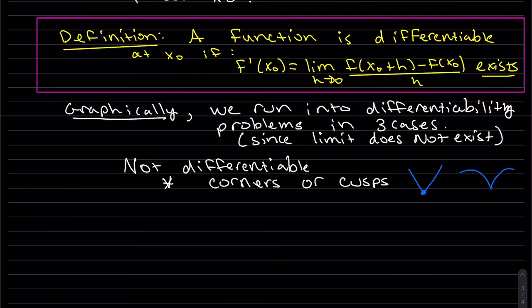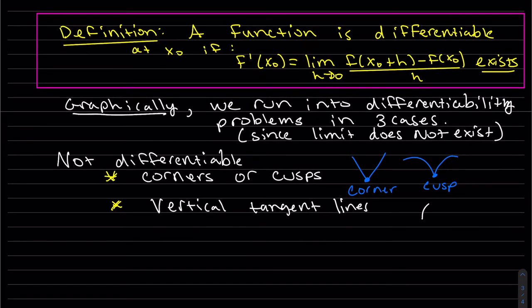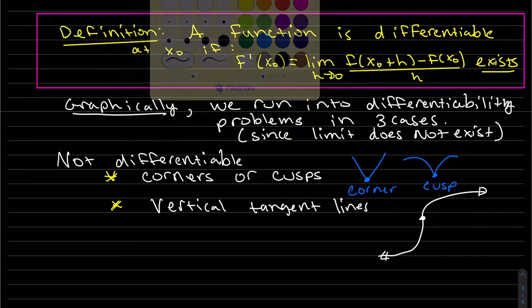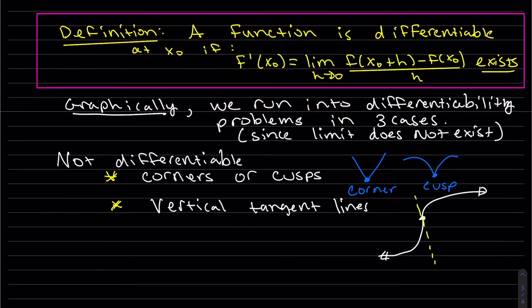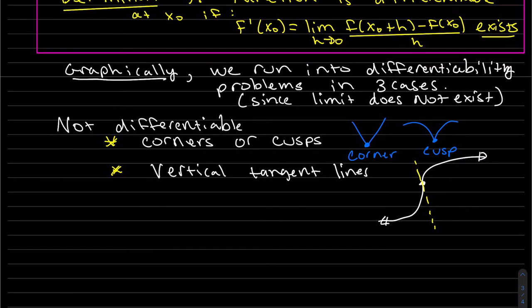A cusp is similar. A vertical tangent line is harder to see — for example, x to the one-third (the inverse of x cubed) has a shape that switches direction at the origin, and the tangent line there is vertical. So again, it's not differentiable at that point — it's continuous but not differentiable, because that limit doesn't exist.